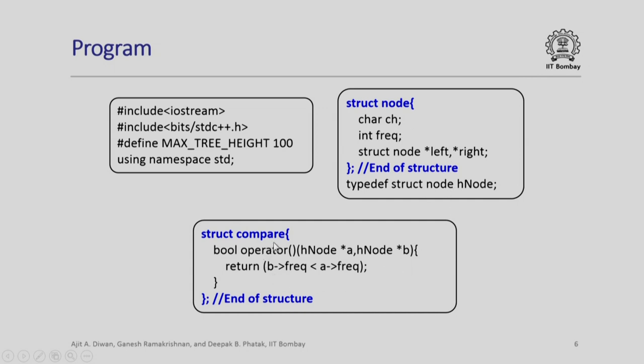This is the compare struct. It is a bool operator which will actually check the frequency of b and frequency of a and it will return if the frequency of b is less than frequency of a it will return true otherwise it will return false. This is the function that we shall be using in order to insert nodes in the proper order in the priority queue that we are going to use.